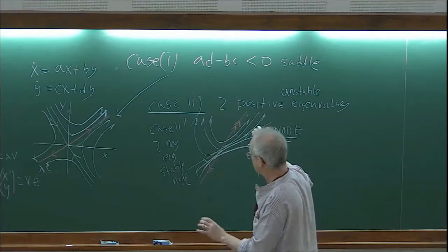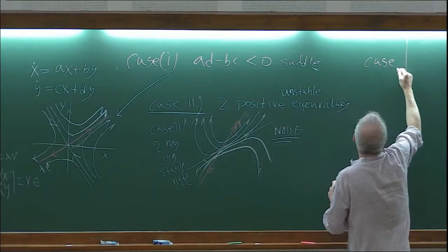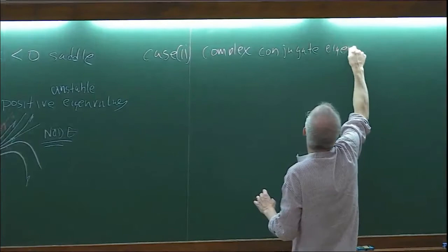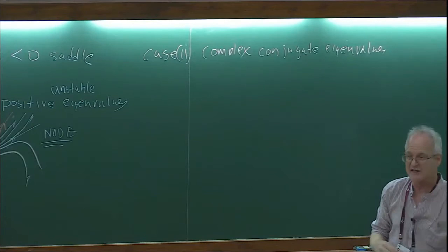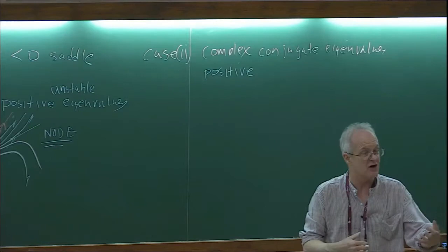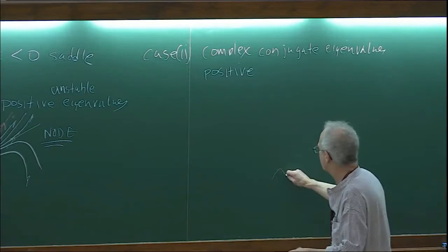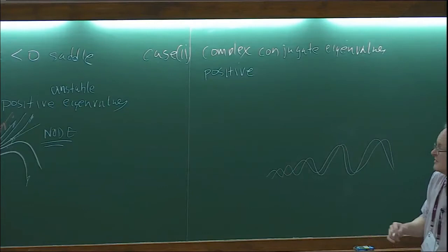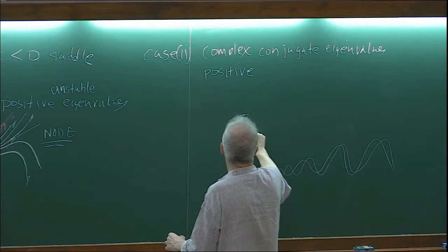That leads to case three: complex eigenvalues. Suppose they're complex with positive real part. We know the solutions are exponentials times sines and cosines — exponentially growing and oscillating. So in the phase plane, things spiral out. They might spiral clockwise or counterclockwise. This is called an unstable spiral.